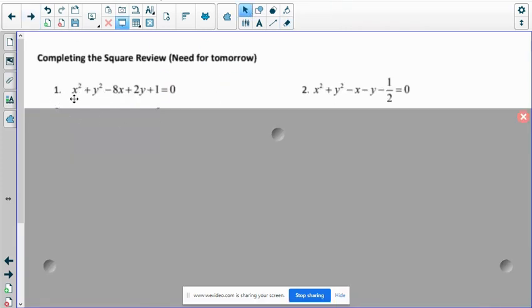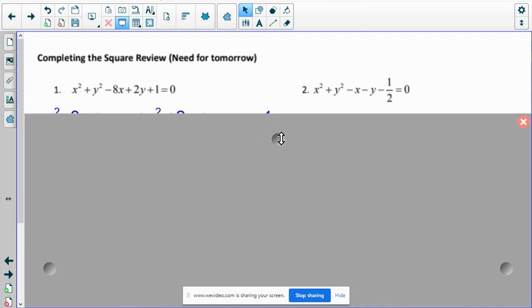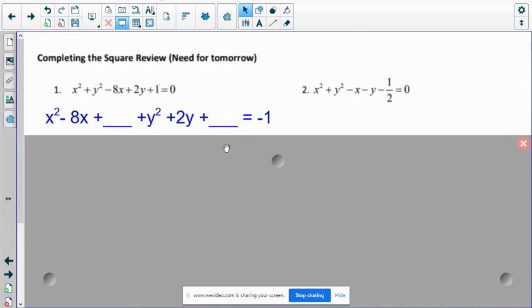So this is something that you did back in geometry is you have this written out. What the first thing I would recommend doing is moving all my x's to be together and all my y's to be together. And I'm going to move any numbers to the other side.